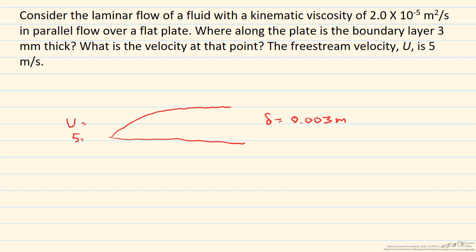In order to find where along the plate the boundary layer is 3 millimeters thick, we'd like to use the Blasius solution. However, in order to use it, the flow has to be laminar at that point. Since we can't calculate the Reynolds number without that length, we have to assume that the flow is laminar and confirm it after we solve the problem.